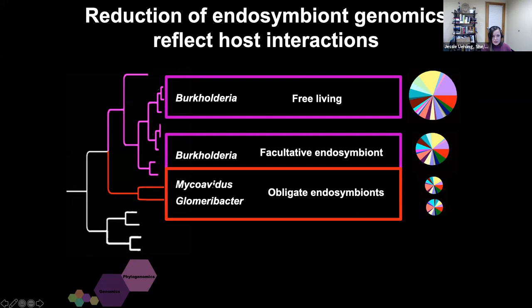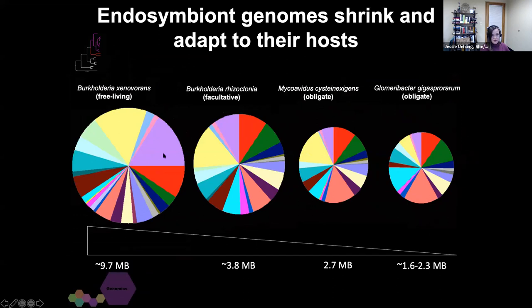When we compare genome size and content across this gradient from free-living to obligate, we see that the genome really shrinks — it gets a lot smaller. The size of the genome gets quite a bit smaller and the functional content shifts appreciably. These slices of the pie are COGs — a functional gene annotation — and you can see, for example, a pathway like protein degradation might be a very small percentage of one genome but a complete quarter of another. One of the questions we ask is how has this symbiosis shaped the genomes of the organisms involved? On the endosymbiont side, the answer is shrinkage — they just basically lose things they no longer need.